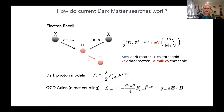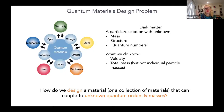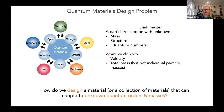So how do we start thinking about the design problem of dark matter detection? We have dark matter particles whose individual masses we don't know, we don't know if they have internal structure, and we don't know if they have quantum numbers like spin. We do know the velocity distribution and the total mass. The design question becomes: how do we design a material or collection of materials that can couple to these unknown quantum orders and unknown mass ranges?